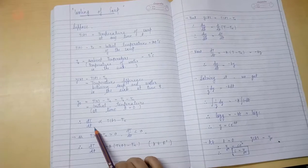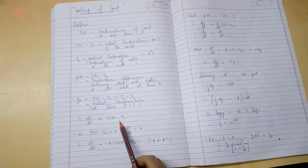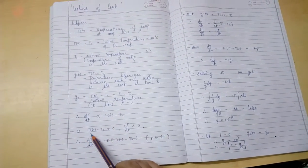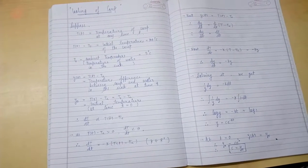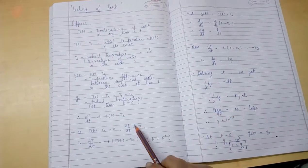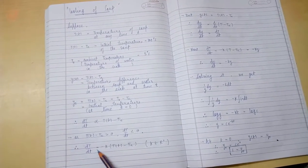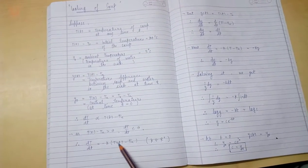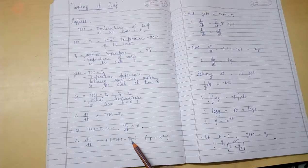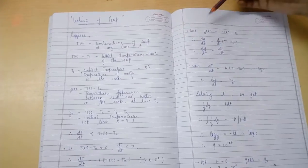Therefore, dT by dt is proportional to T(t) minus Ta. As T(t) minus Ta is greater than 0, i.e. the soup is going to cool, so dT by dt is less than 0. So, dT by dt is equal to minus K T(t) minus Ta, where K is a positive constant.